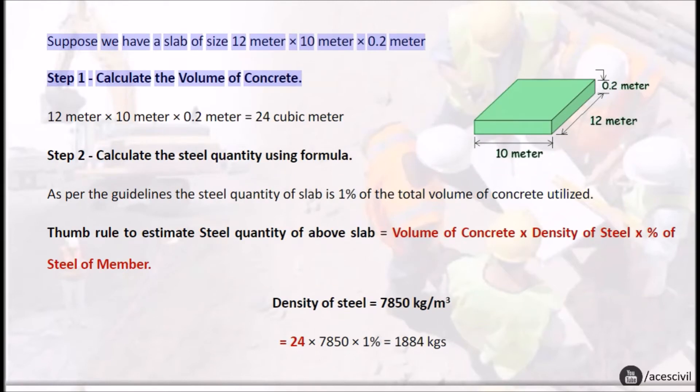Suppose we have a slab of size 12 meter times 10 meter times 0.2 meter. Step 1: Calculate the volume of concrete. 12 meter times 10 meter times 0.2 meter equals 24 cubic meter. Step 2: Calculate the steel quantity using formula. As per the guidelines, the steel quantity of slab is 1% of the total volume of concrete utilized.